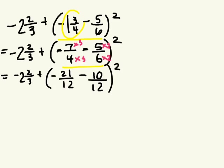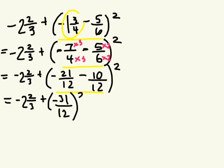Okay, have we simplified our brackets yet? Can we still simplify what's inside the bracket? Yeah. We can do negative 21 take away 10. What do you get? Negative 31 over 12, all of that to the power of 2.